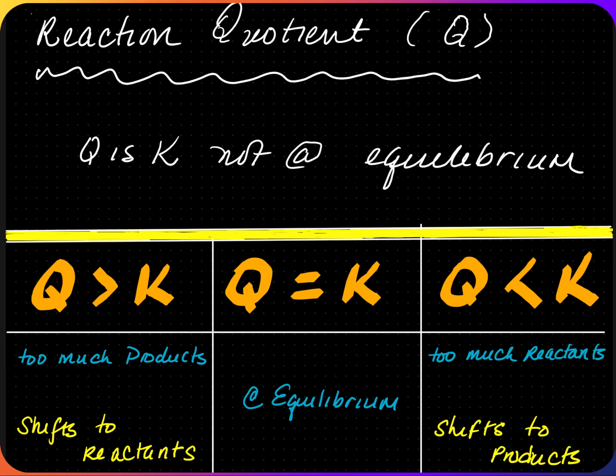The reaction quotient Q is not at equilibrium. By calculating Q, you are able to predict if the reaction is product-favored, reactant-favored, or at equilibrium.